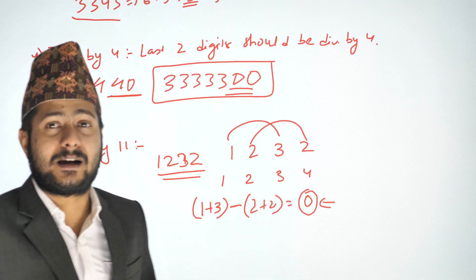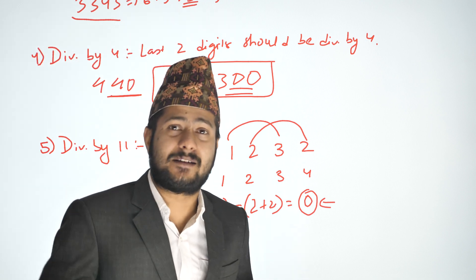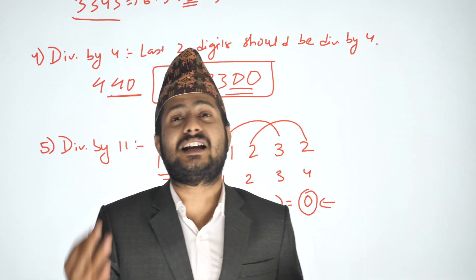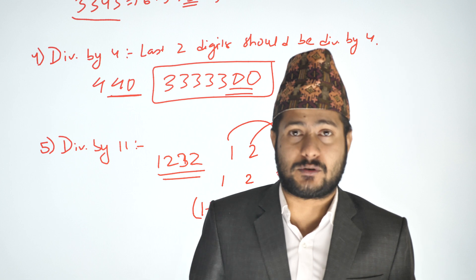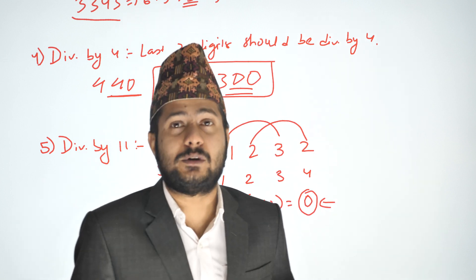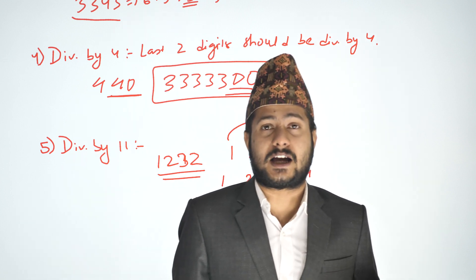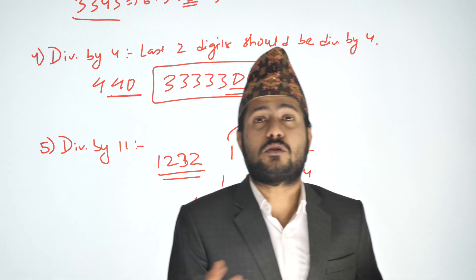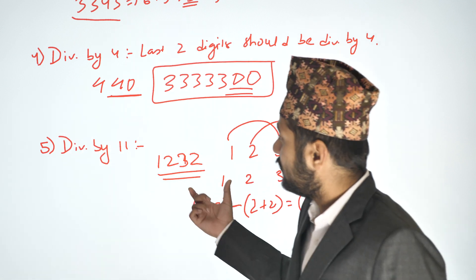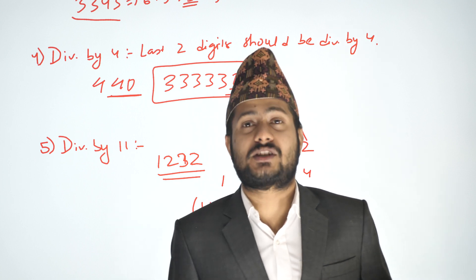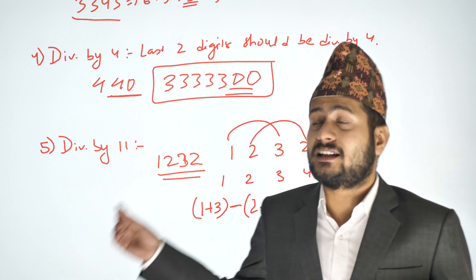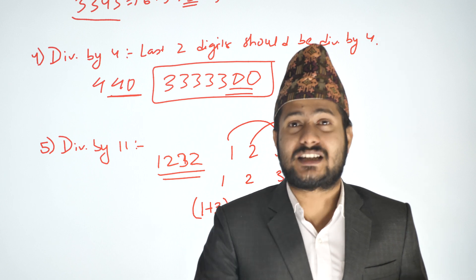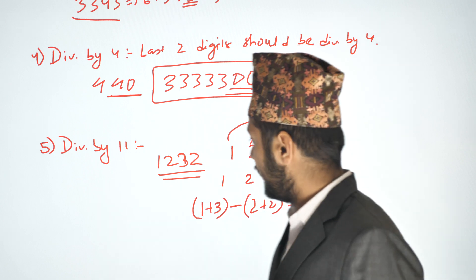We also look at divisibility by 5, 6, 7, 8, 9, 12, 13, 14, 15, 16, 17, 18, 19, 20 — covering all these divisibility concepts. Next is the complete divisibility test summary.